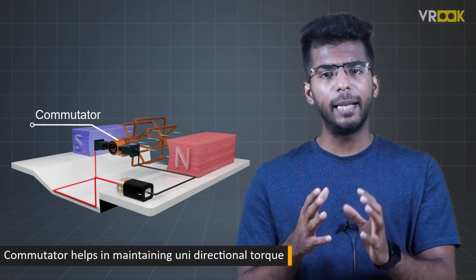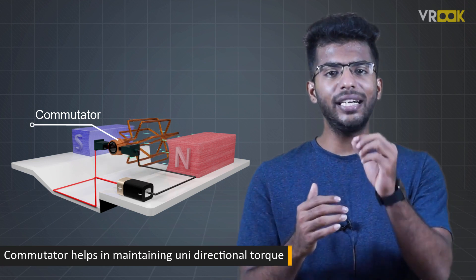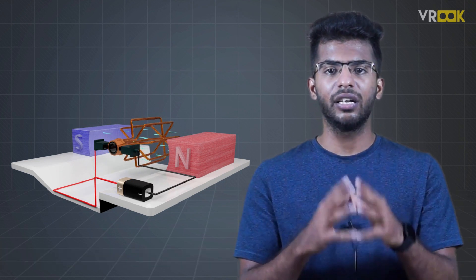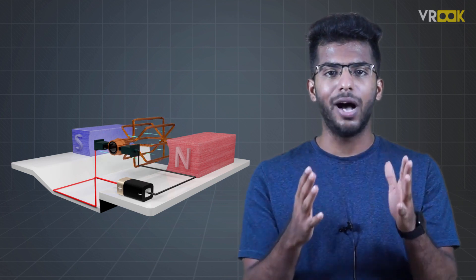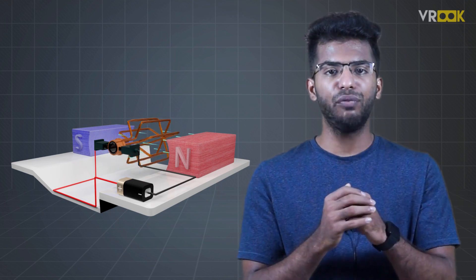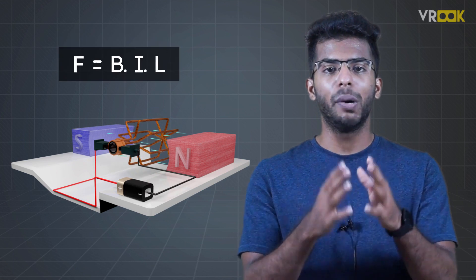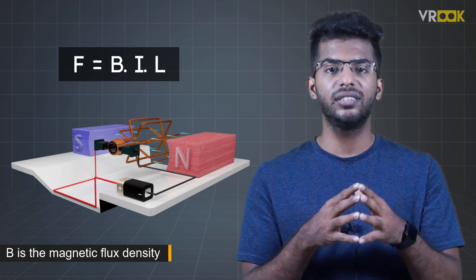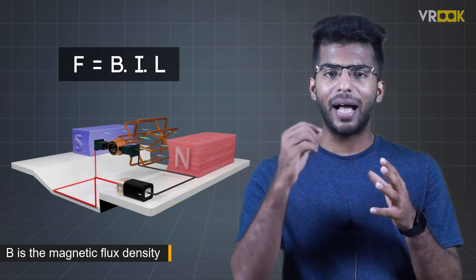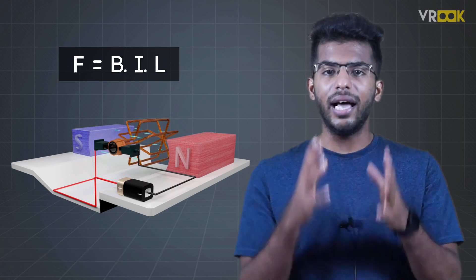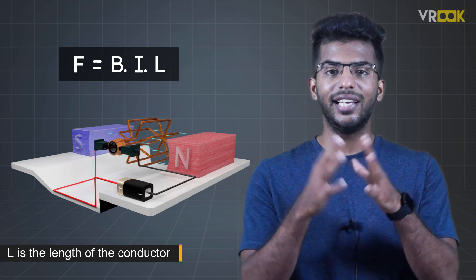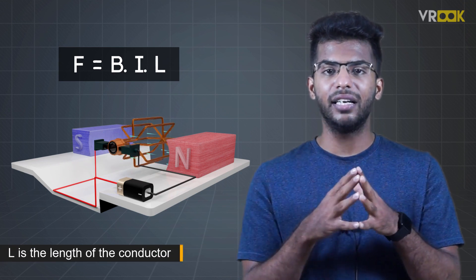So, commutator helps in maintaining unidirectional torque. The force acting on the conductor which makes it move up or down is given by a simple formula F is equal to BIL where B is the magnetic flux density or the number of magnetic lines of force. I is the current flowing through the conductor and L is the length of the conductor under the magnetic field.